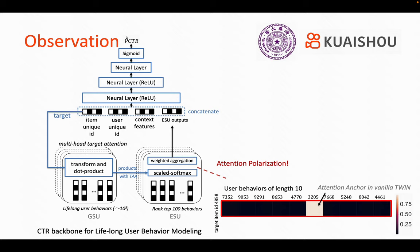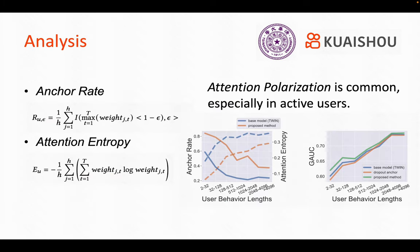However, we find it is common that attention modules tend to over-concentrate on merely small subsets of a user's historical behaviors. We call this attention polarization. To analyze this phenomenon, we propose two metrics — anchor rate and attention entropy — to quantitatively measure how polarized the attention weights are over samples of a certain user.